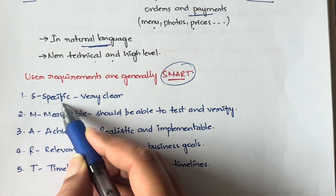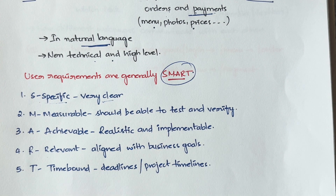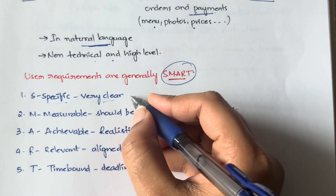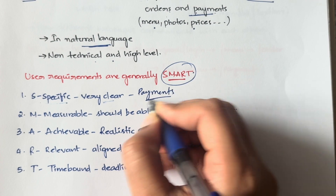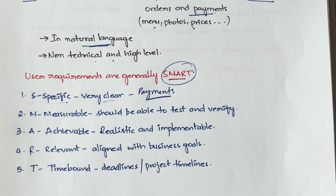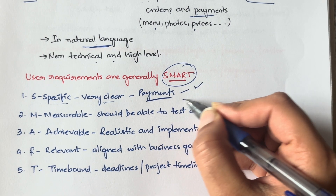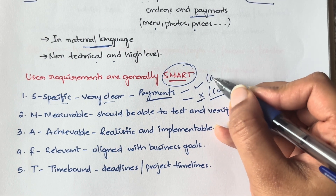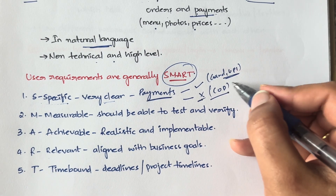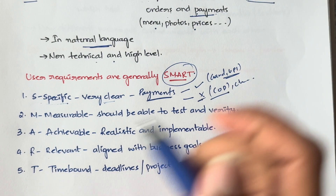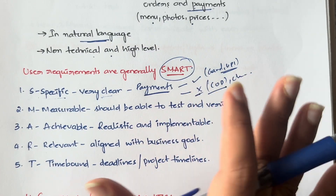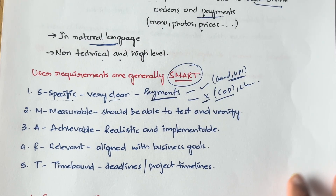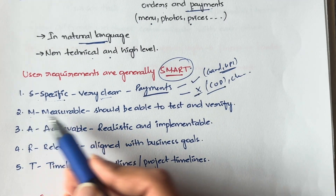S stands for Specific — the requirements must be very clear, not vague. For example, if a user asks for a payment interface, they must clearly specify what types of payments are accepted and which are not. For instance, only card payments and UPI payments are accepted; cash on delivery and checks are not accepted. That level of clarity is required.